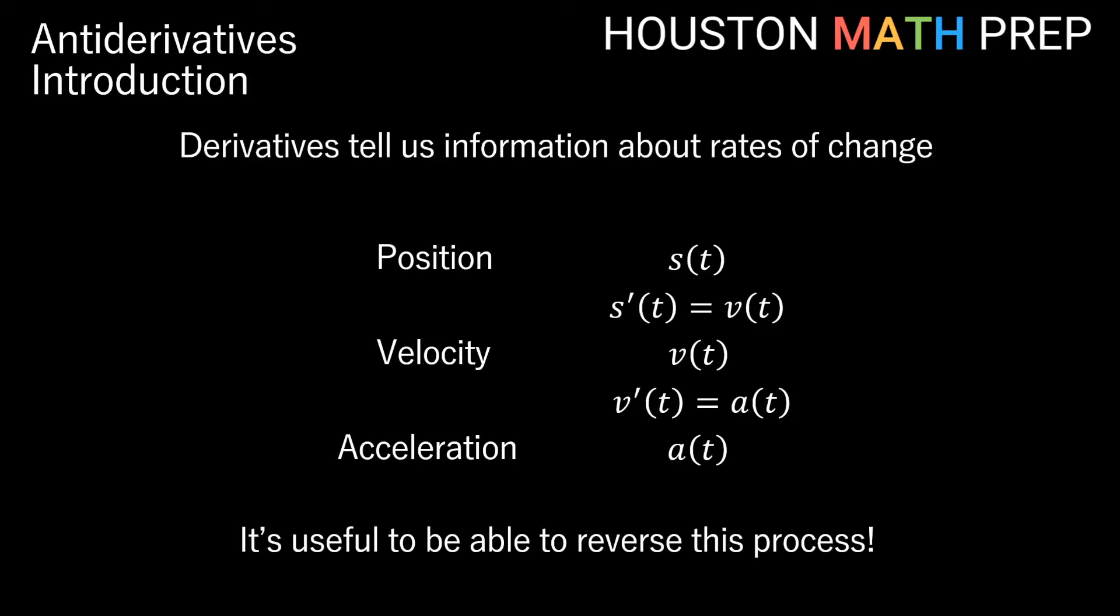And oftentimes it's useful to be able to reverse the process. Let's say I know something about velocity of an object, but I would like to know about its position. Or I know about its acceleration, and I would like to know its velocity. Reversing this process of finding the derivative is just called finding the anti-derivative of a function.